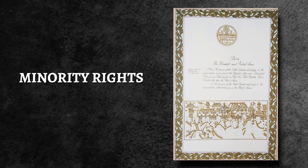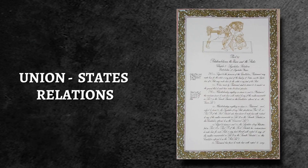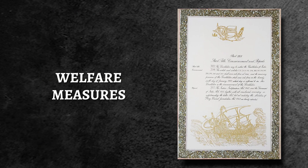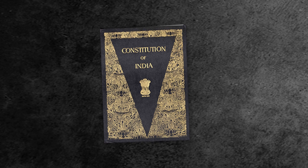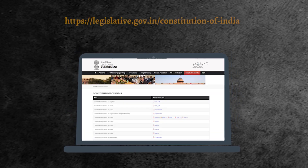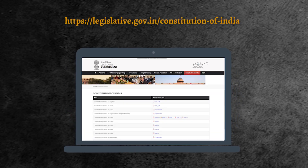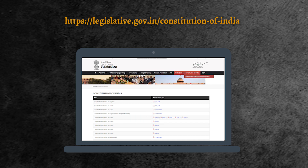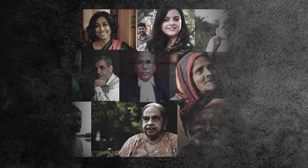The Constituent Assembly went on to debate several critical issues, including fundamental rights, minority rights, women's rights, union-state relations, governance structures, welfare measures, and so on. These debates and the Constitution itself guide us in making sense of our issues today. All proceedings of the Constituent Assembly are documented and available online, and copies of the Constitution are also available in different languages. Reading these from time to time will guide us to examine our present and play our role as citizens more effectively in the future.